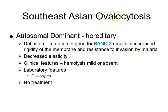Southeast Asian ovalocytosis is autosomal dominant and again a malarial belt condition. It involves the band 3 gene, deleting or changing three amino acids in the protein so that it increases the rigidity of the membrane — it's not as elastic. The cells hemolyze faster. Basically all we see are ovalocytes and we don't treat it.